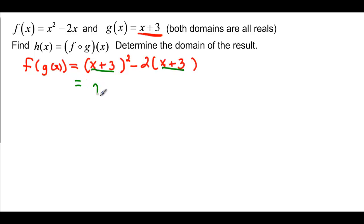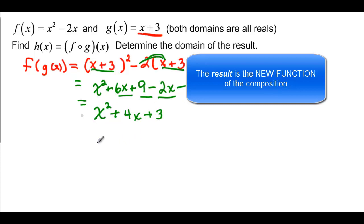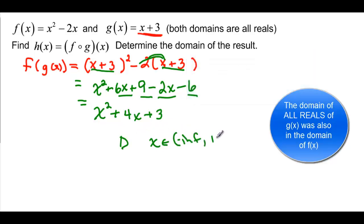Let's work it out. Expanding (x plus 3) squared gives x squared, plus 6x using the shortcut of twice the product, plus 9. Then distributing the negative 2 gives minus 2x minus 6. Combining like terms: x squared, and 6 minus 2 gives plus 4x, and 9 minus 6 gives plus 3. The domain of this result is x is an element of negative infinity to infinity — all reals, because both original functions had all reals as their domains.